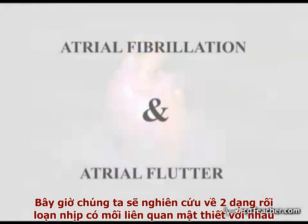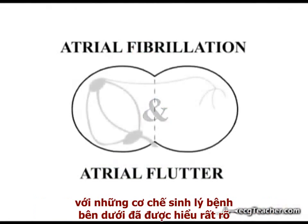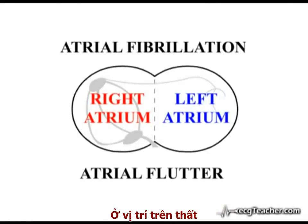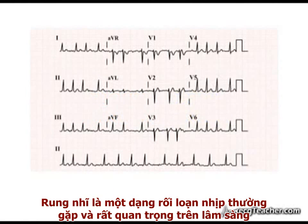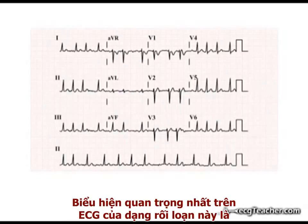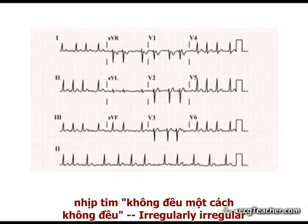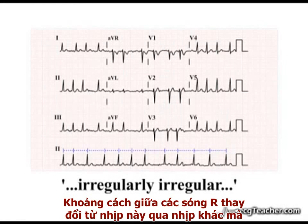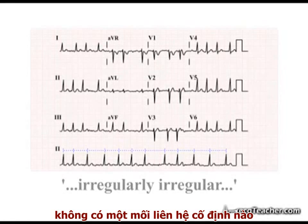We will now consider two closely related arrhythmias with well-defined underlying pathogenic mechanisms arising in the supraventricular region. Atrial fibrillation is a very common and clinically important arrhythmia. The most striking finding on the ECG in this disorder is that the heart rhythm is irregularly irregular, the distance between R-waves varying from beat to beat with no discernible pattern.